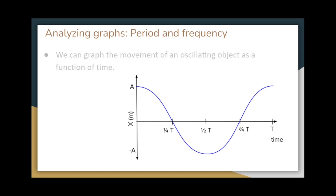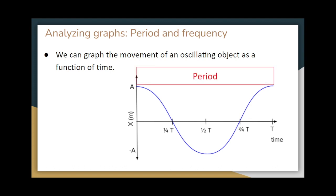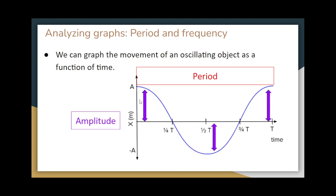A nice property of simple harmonic motion is that we can graph the movement of an oscillating object as a function of time. The period is one complete cycle — from a peak, it goes down and comes back to where it started. Amplitude is the maximum displacement from the equilibrium point — that is, from the equilibrium to the highest point, or equivalently to the lowest point. All of these displacements have the exact same amplitude.